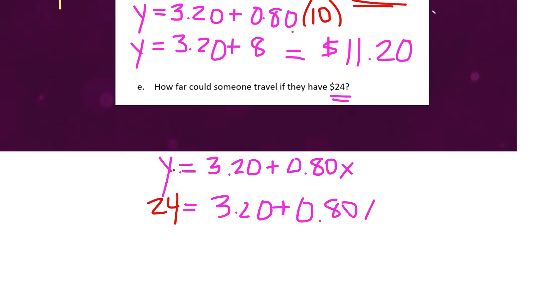And then now we've got an algebraic equation we can solve. If we can figure out what x is, that represents the distance we can drive. So, to get x by itself, first we're going to subtract $3.20 from both sides.